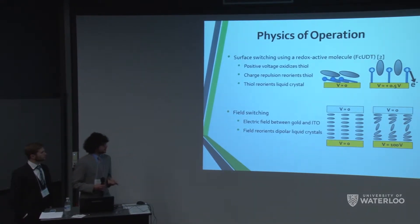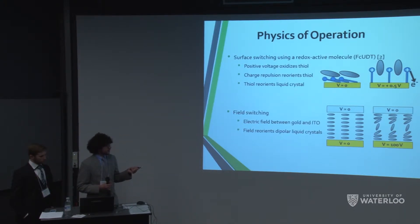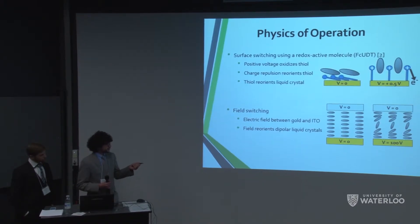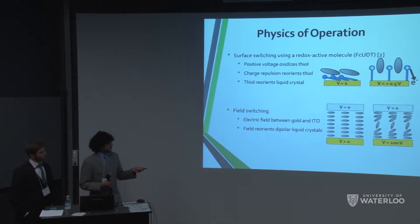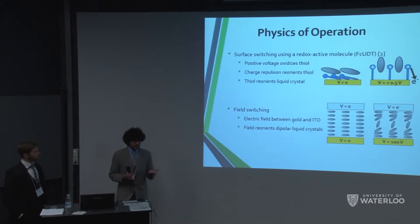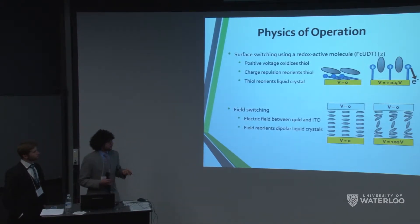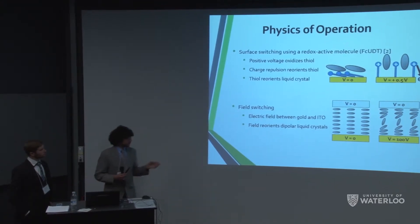We tried the surface switching method but weren't very successful with it, so we moved on to the field switching method. This method involves having two plates: our gold substrate and a transparent ITO glass surface. Applying a voltage to these plates creates an electric field between them. When the field is off, the liquid crystal orients itself according to the boundary conditions; when you apply a voltage, the electric field causes the liquid crystal to reorient to minimize energy, achieving a change in refractive index and ultimately a change in color.